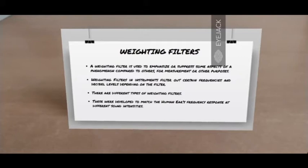So what do weighting filters even filter out? They filter out certain frequencies and decibel levels, and that totally depends on the type of filter. There are different types of weighting filters. Now what are the purposes of these filters? The purpose is to match the human ear's frequency response at different sound intensities.